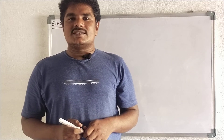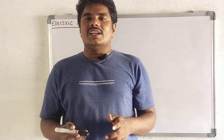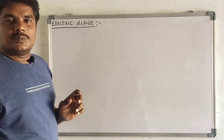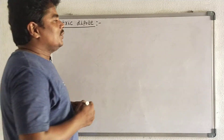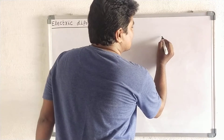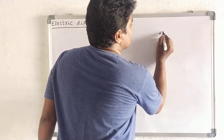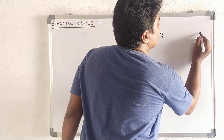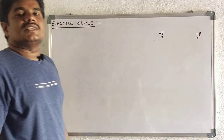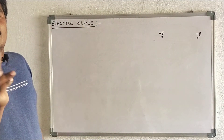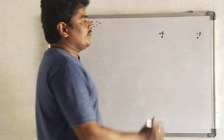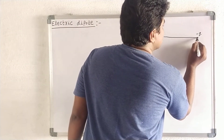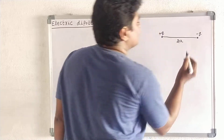Good morning students. Today in this class we discuss about electric dipole. We take two equal and opposite charges — this is plus Q and this is minus Q. These are two equal and opposite charges, and they are separated by a distance 2a.